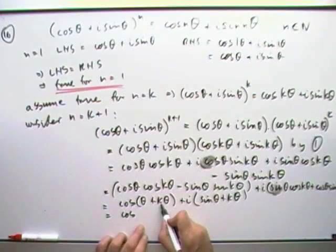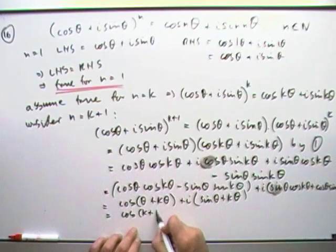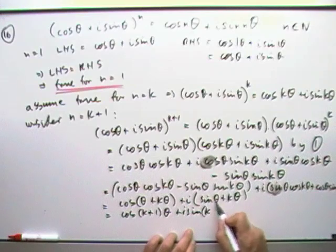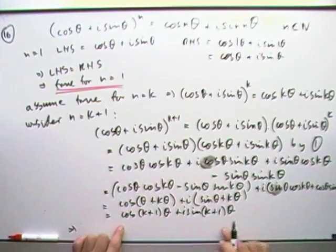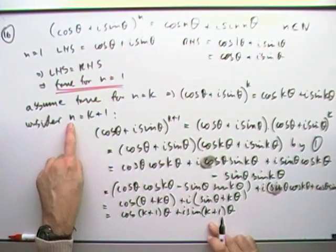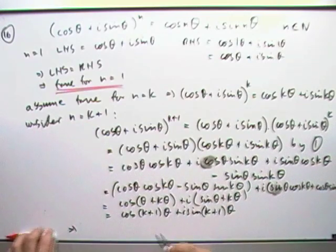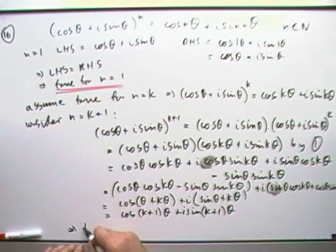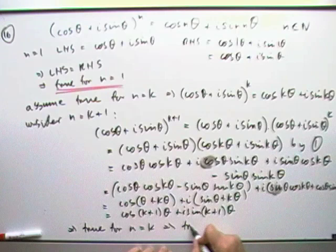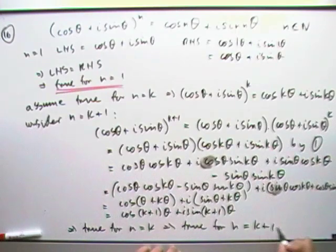Well, and then you've got cos of (k+1) lots of θ, cos(k+1)θ, plus i sine, again, θ and kθ, (k+1)θ, which means you've replicated the original pattern with the n's replaced by k plus 1, so if n is k plus 1, it is in fact true, which means that if it was true for that k though, true for n equals k did in fact mean it was true for n equals k plus 1.